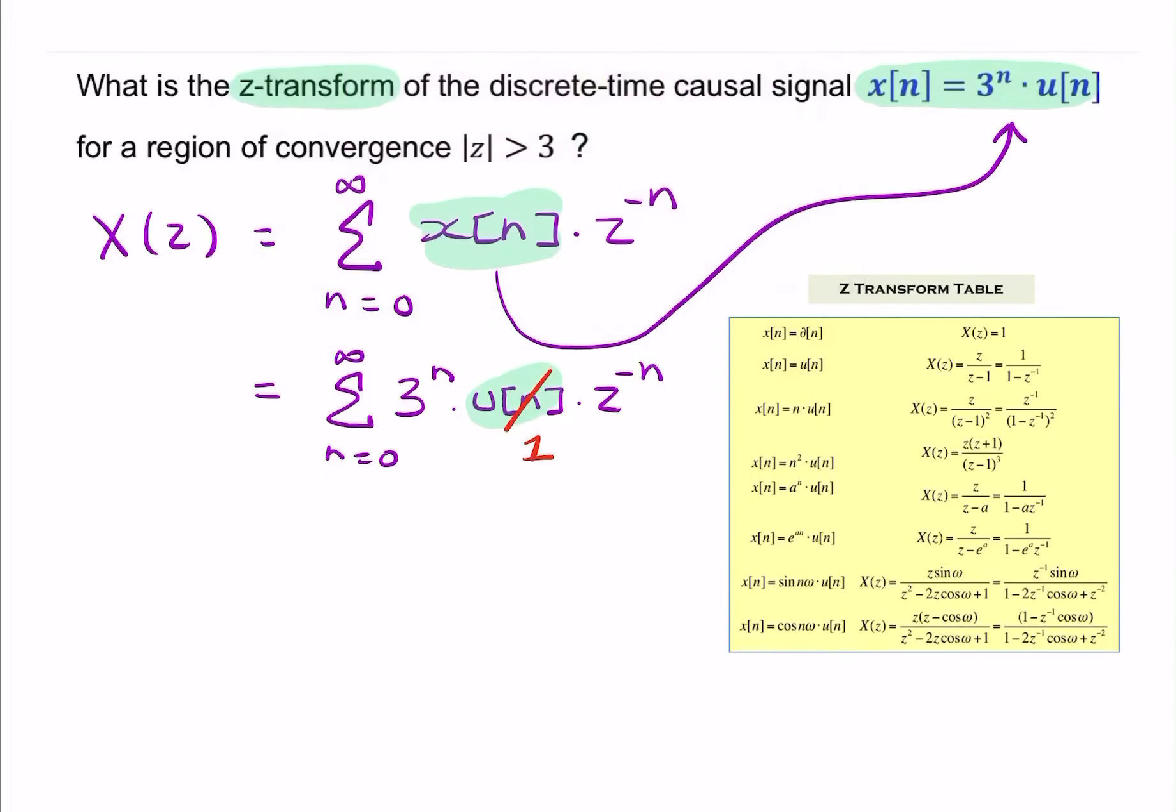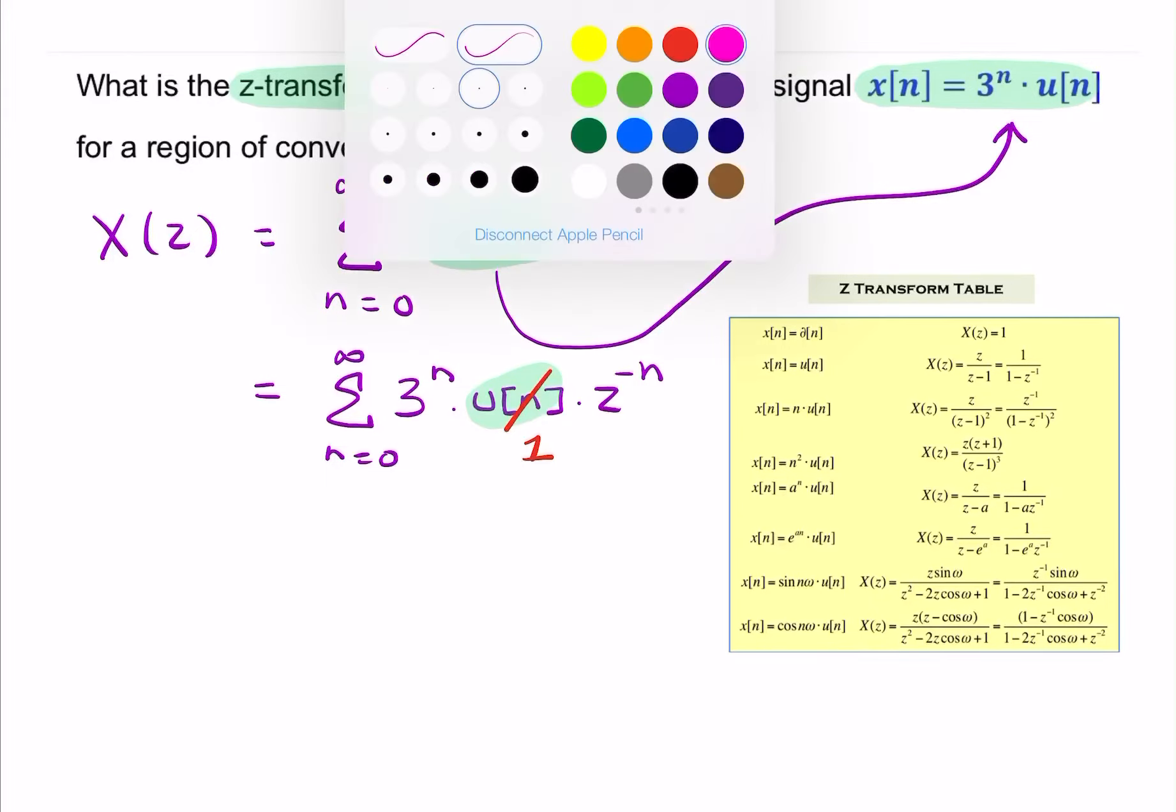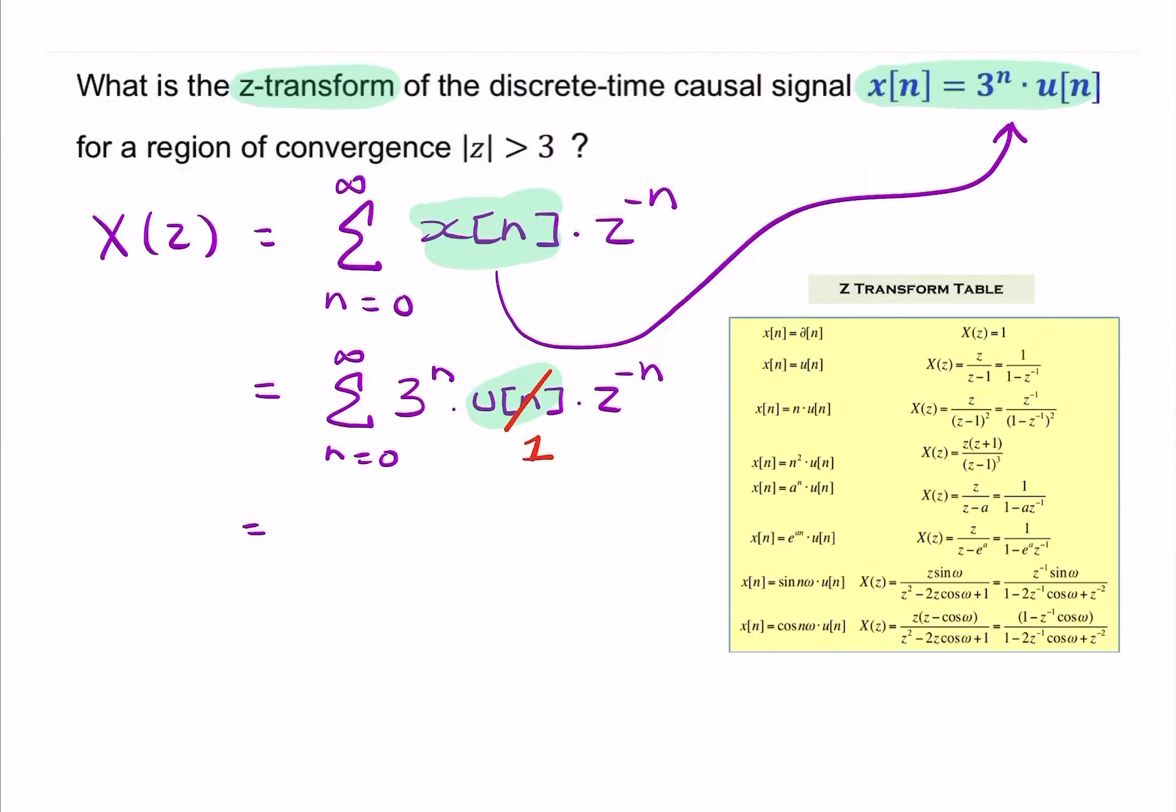And then we can rewrite this as a summation from n equals 0 to infinity of 3 times z to the minus 1 to the power n. So I've combined these together.